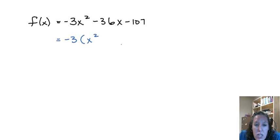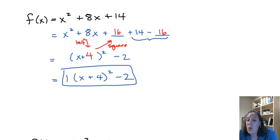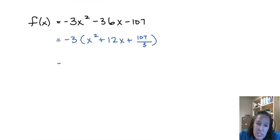If we factor that out we're going to get x squared. The negative is going to come out and we'll get plus 12x, and plus 107 is not divisible by 3. So I'm going to go ahead and just leave that as the fraction 107 over 3. Now what's inside the parentheses is exactly where we started this previous example. So we're going to make it look like that inside the parentheses.